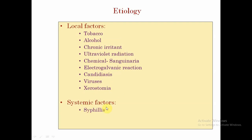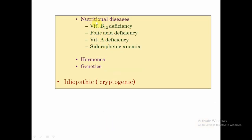Under systemic factors, we have syphilis, nutritional deficiencies like vitamin B12, folic acid, vitamin A, and iron deficiency. Then we have hormonal variations and genetics, especially mutations involving the P53 gene.